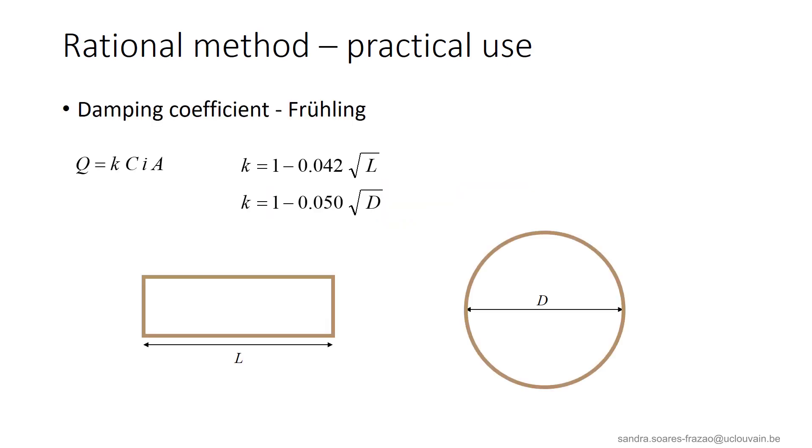Usually, for watersheds more elongated or wider than the average, the discharge estimated using the rational method will be corrected by a factor, depending on the shape of the catchment as illustrated here.